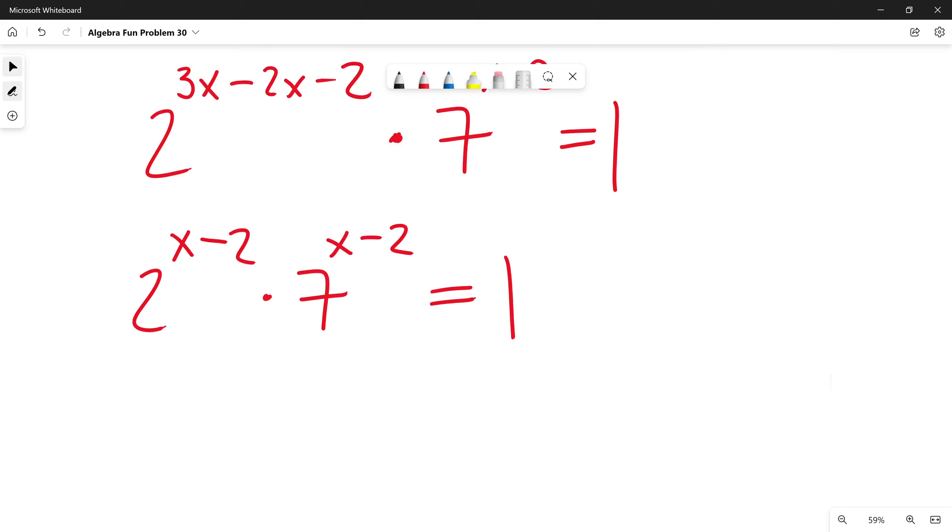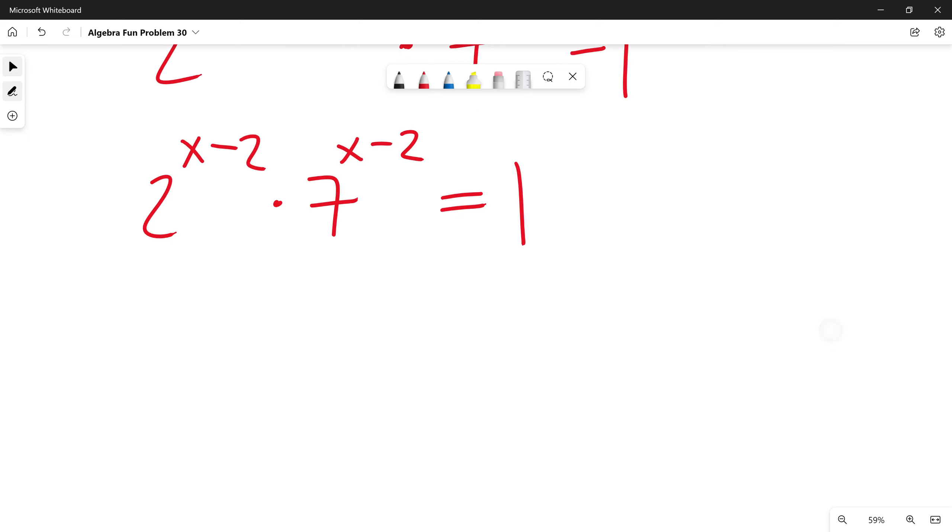I can see the same exponents, x minus 2, in both numbers. So I can write it as 2 times 7, to the power of x minus 2. This is equal to 1.